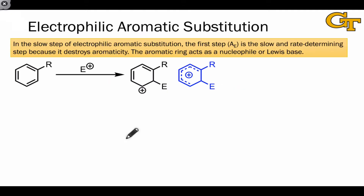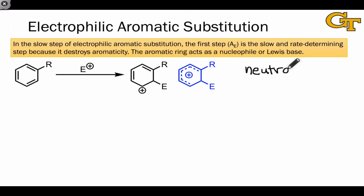In the first step of electrophilic aromatic substitution, the key electrophile E+ coordinates to the aromatic pi system, creating a cationic intermediate. In general, we go from something neutral — a neutral aromatic starting material — to a sigma-complex intermediate that is positively charged. And this is true no matter where the electrophile adds.